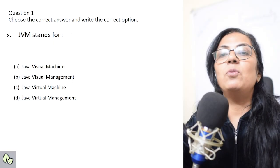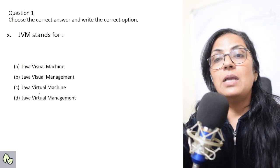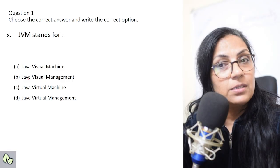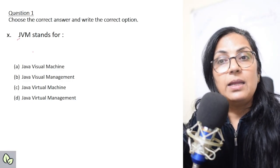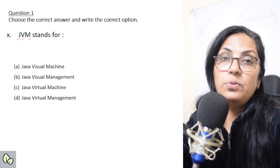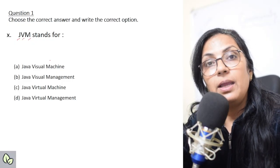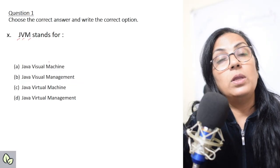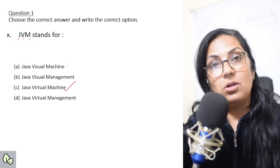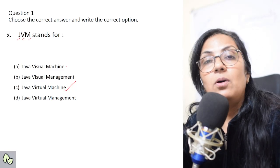We move on to the 10th question: 'JVM stands for — Java Visual Machine, Java Visual Management, Java Virtual Machine, or Java Virtual Management?' If you notice, the first word is Java (J), the second starts with V, and the third starts with M in all four options — so please go through all options carefully and utilize your reading time. The correct answer is Java Virtual Machine, also known as the Java interpreter.